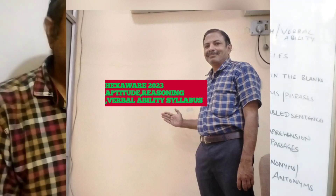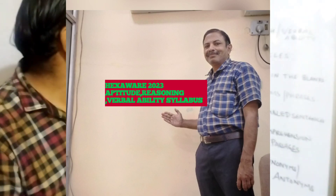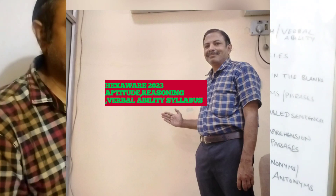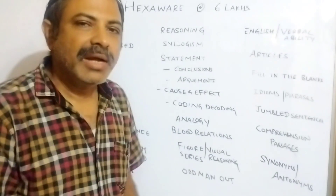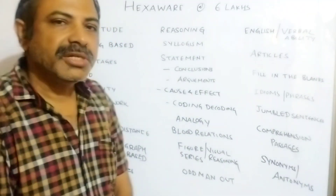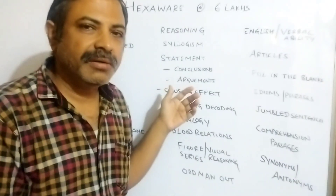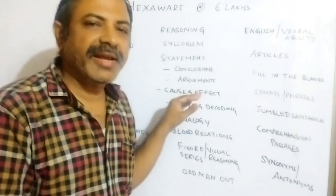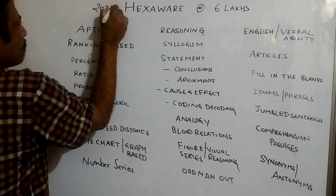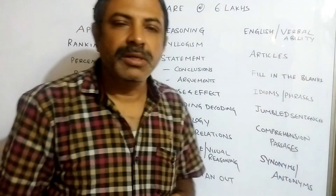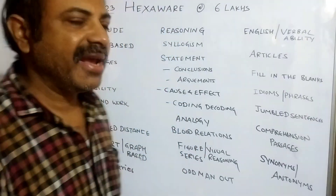Good morning dear students. The last video explained about Hexaware PGT — Primary Graduate Engineer — the training package is 6 lakhs. The syllabus includes aptitude, reasoning, English, technical, and coding. Now I'm going deeper into the expected topics for the Hexaware 2023 paper. Looking into these topics will help you crack the Hexaware exam by up to 60% — I can give that guarantee.